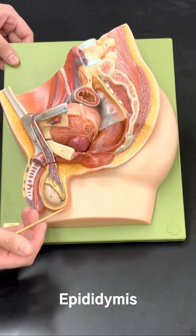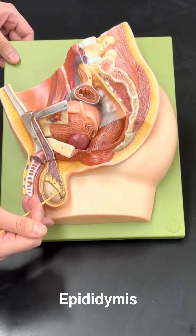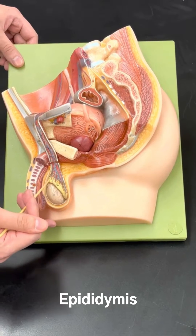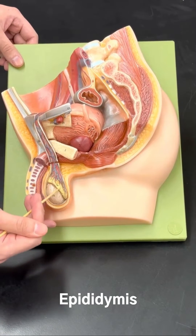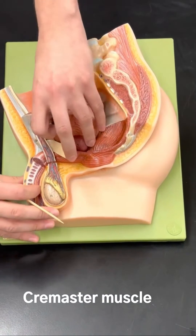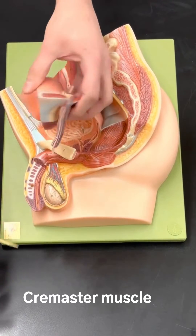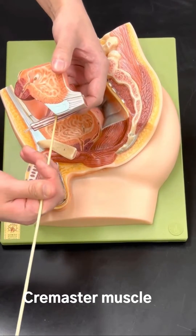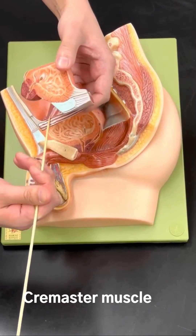Next we have the epididymis, and then above here we have the cremaster muscle. This here is the cremaster muscle.